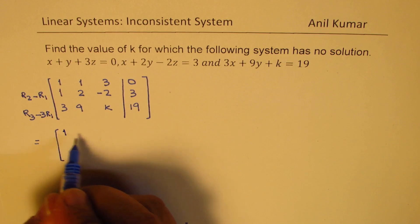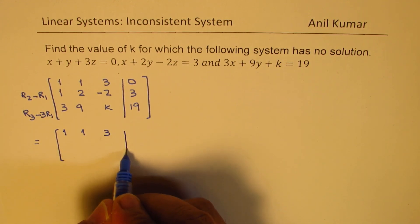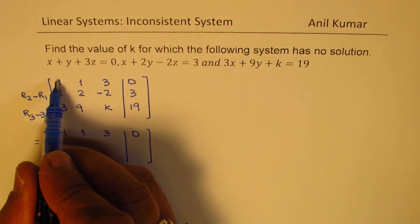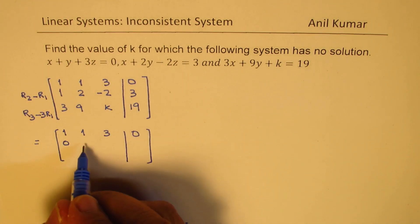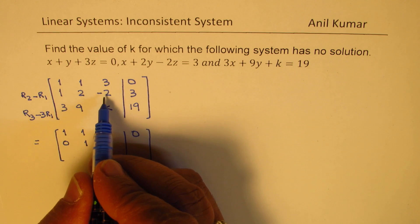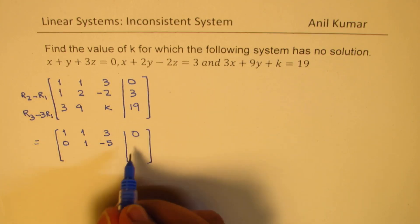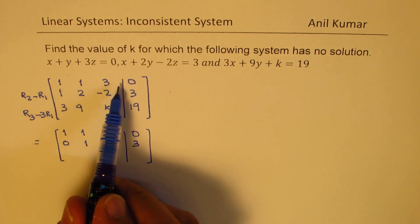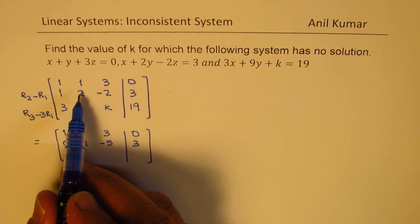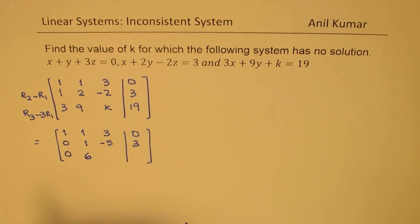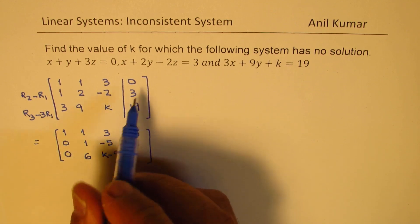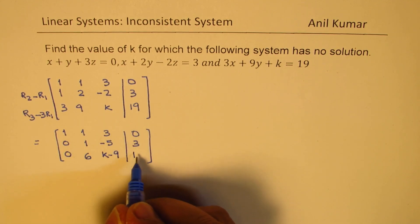So first row remains same: 1, 1, 3, 0. The next one we take the difference, so 1 minus 1 is 0, 2 minus 1 is 1, minus 2 minus 3 is minus 5, and 3 minus 0 is 3. Now 3 times this is to be taken away from here, so 3 minus 3 will be 0. 3 times 1 is 3, when you take away from 9 you get 6. 3 times 3 is 9, when you take away from k you get k minus 9. 3 times 0 is 0, when you take away from 19 we get 19 itself.